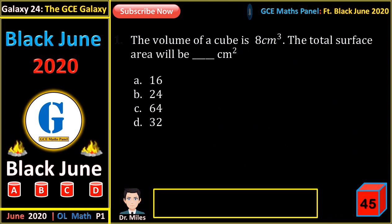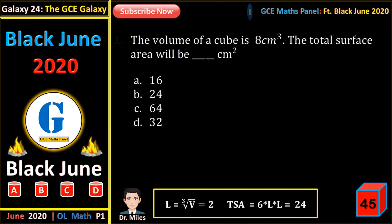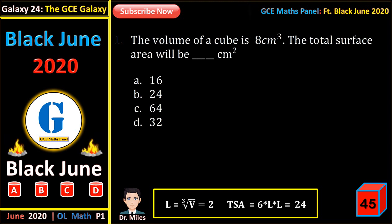The volume of a cube is 8 cm cubed. The total surface area will be? For a cube, the volume equals side cubed. Therefore the side equals the cube root of the volume, which is 2. Total surface area is side squared times 6, giving us 24.